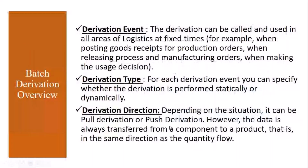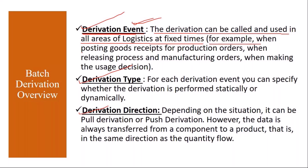Before going into the settings, we need to understand some concepts like derivation event, derivation type, and derivation direction. Derivation event means the derivation can be called in all areas of logistics at a fixed point of time — basically, at what point of time you want to trigger this derivation or transfer. For example, when posting goods receipt for production orders, when releasing the manufacturing or production orders, or when making a usage decision — that is called a derivation event.